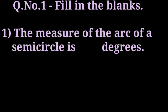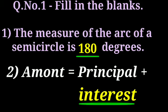Question number 1, fill in the blanks. First, the measure of the arc of a semicircle is 180 degrees. Second, formula of amount. Amount is equal to principal plus interest. You have to underline correct answer while writing all answers.